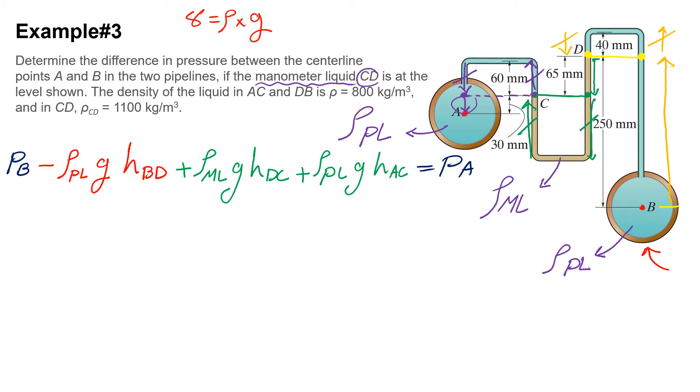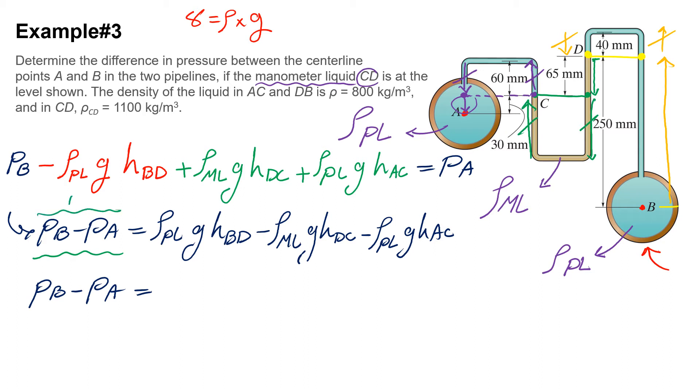Now I'm going to simplify this equation and rearrange it. I moved PA to the other side of equation and the other terms to the other side. This will give me delta P, the difference in pressure. Now that I have written that, I am going to plug in all the information that the problem has given me, including all the rows, G, and H values.